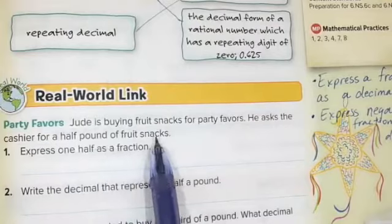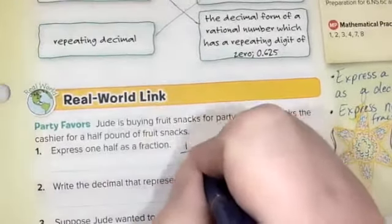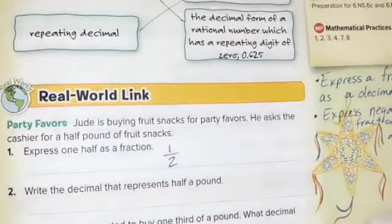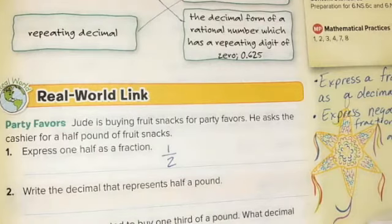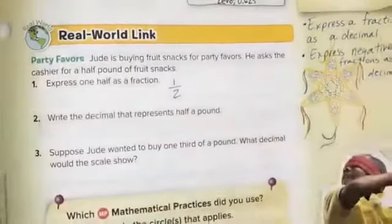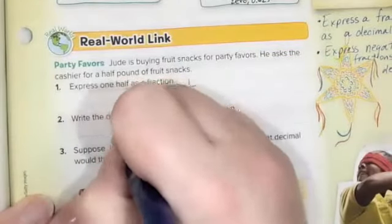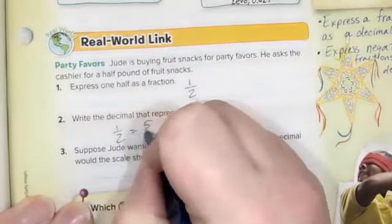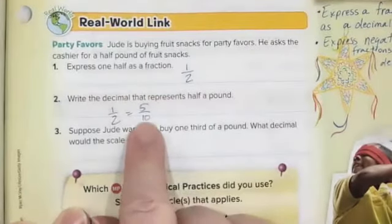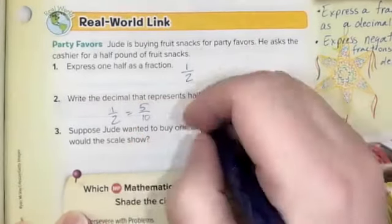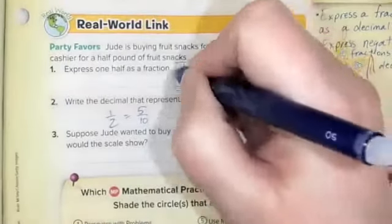He asked the cashier for half a pound of fruit snacks. Half a pound written as a fraction is simply one over two, so one half — and write the decimal that represents half a pound. As a decimal, one half is equivalent to five tenths if you think of our base-10 decimal system with a denominator of 10. So five tenths written as a decimal is 0.5.